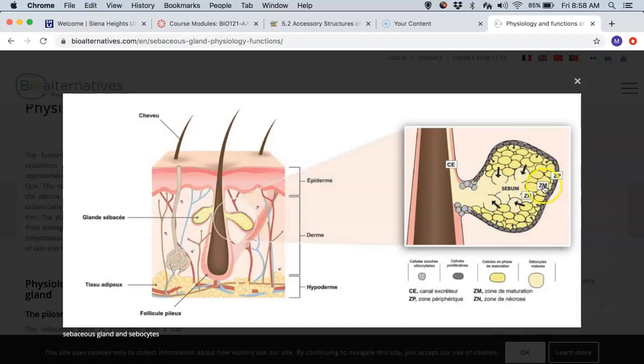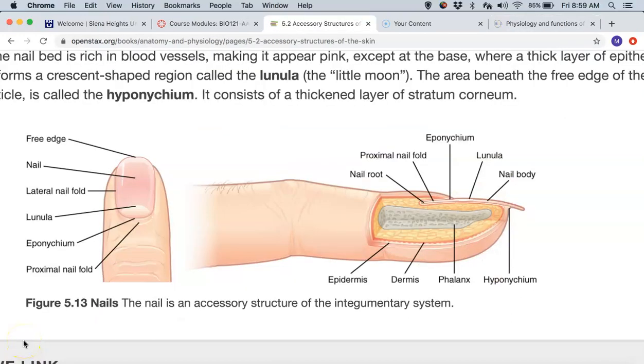And so that's how the sebaceous gland works. It's got the zone of periphery, the zone of maturation, and then the zone of necrosis where those cells that have swollen with the sebum burst and release the sebum into the hair follicle. I now want to talk quickly about another accessory structure, which is the nail.